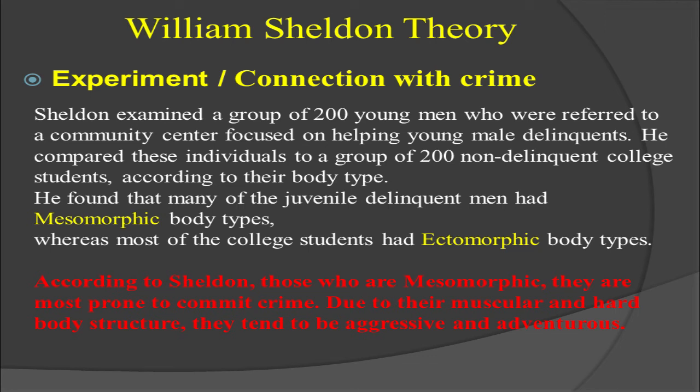William Sheldon concluded that those who are mesomorphic are most prone to commit crime due to their muscular and hard body structure. They tend to be aggressive and adventurous. Those with a mesomorphic body structure are more prone to commit crime and are more likely to lead towards the commission of an offence.